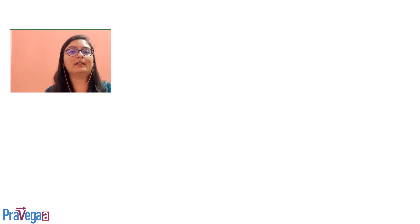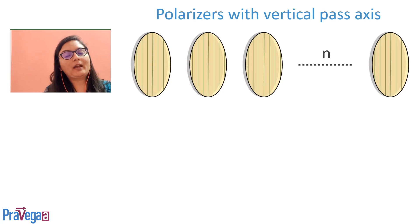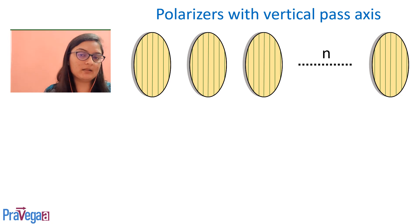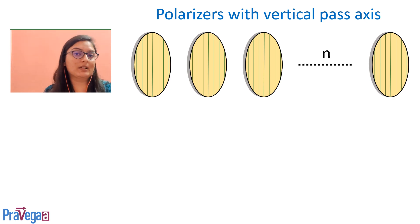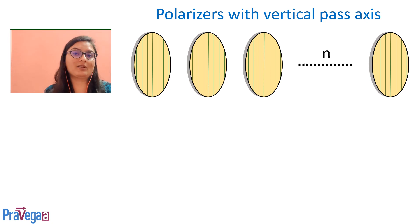Hello everyone. Today we will discuss a question based on Malus's Law that came in the GATE 2019 examination. In this question, we are given a set of n polarizers with the vertical pass axis, and the mth polarizer makes an angle of mπ/2n with the vertical axis.